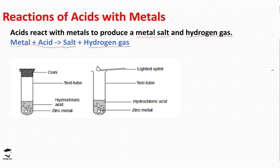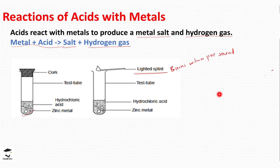A laboratory example is zinc metal reacting with hydrochloric acid — this is one of the most suitable reagent combinations for this experiment. When zinc reacts with hydrochloric acid in a test tube or boiling tube, you will notice effervescence, showing that a gas is being produced. You will also see bubbles of a colorless gas, because hydrogen is colorless. The gas is tested by introducing a burning splint, which burns with a pop sound, confirming that the gas produced is hydrogen.